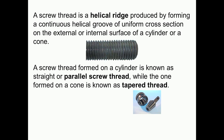In this photo we can see the helical ridge produced and the cross section is uniform for all the threads. A screw thread formed on a cylinder is known as straight or parallel screw thread, while the one formed on a cone is known as tapered thread. You can see here external tapered thread and internal tapered thread.